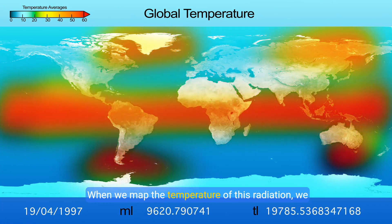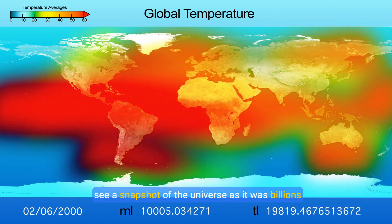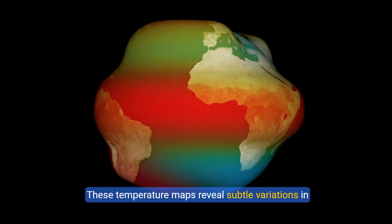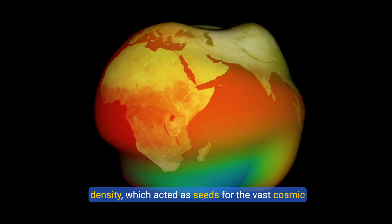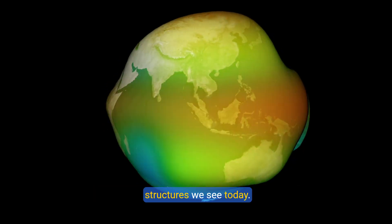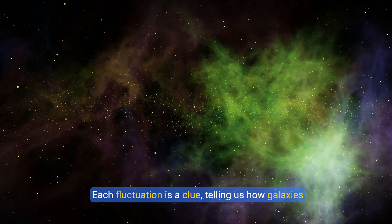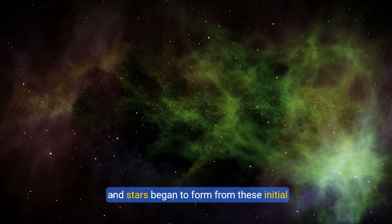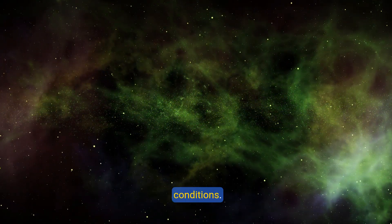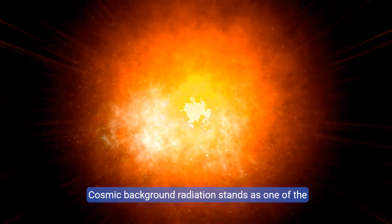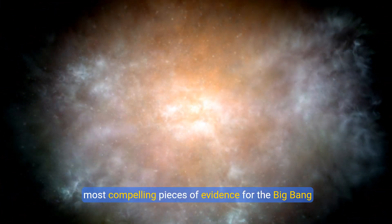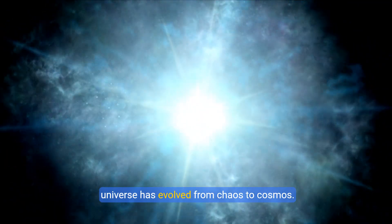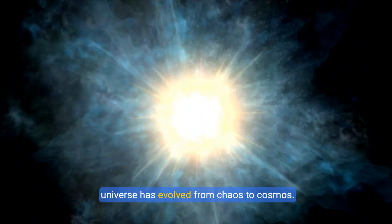When we map the temperature of this radiation, we see a snapshot of the universe as it was billions of years ago. These temperature maps reveal subtle variations in density, which acted as seeds for the vast cosmic structures we see today. Each fluctuation is a clue, telling us how galaxies and stars began to form from these initial conditions. Cosmic background radiation stands as one of the most compelling pieces of evidence for the Big Bang theory, reinforcing our understanding of how the universe has evolved from chaos to cosmos.